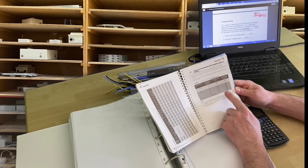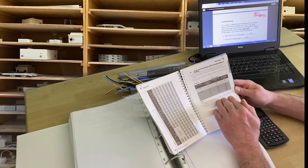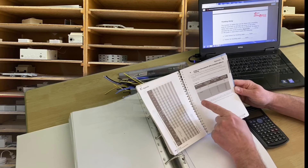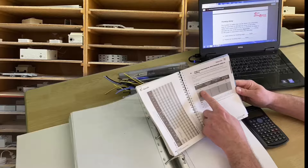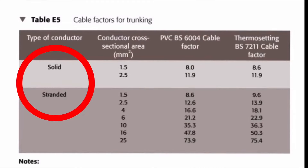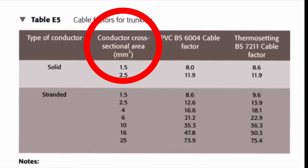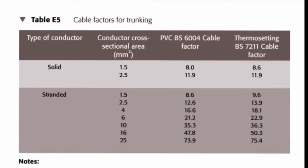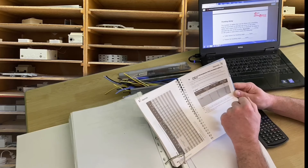Table E5 looks at the factor for the conductors in exactly the same way as when we were doing conduit sizing. First we have the type of conductors — whether solid or stranded — and in trunking and conduit systems we're always working with stranded cables. Then we have the cross-sectional area. Column three covers thermoplastic PVC — BS6004 cables — and the final column covers thermosetting PVC, an insulating material also found on singles.